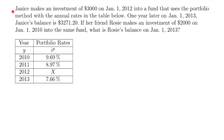Here's our last example. Janus makes an investment of $3,000 on January 1st of 2012 into a fund that uses the portfolio method with the annual rates in the table below. One year later on January 1st of 2013, Janus's balance is $3,271.20. If her friend Rosie makes an investment of $2,000 on January 1st of 2010 into the same fund, what is Rosie's balance on January 1st of 2013?